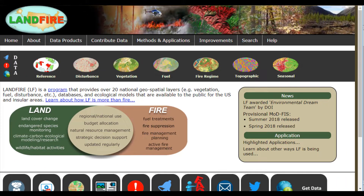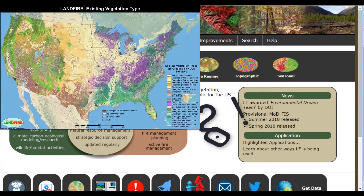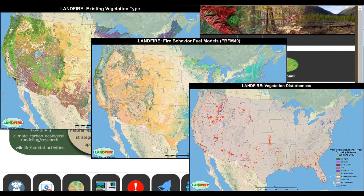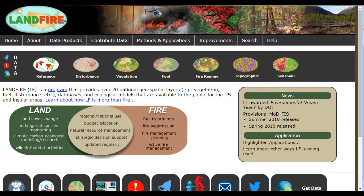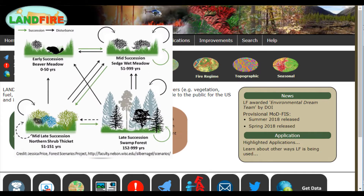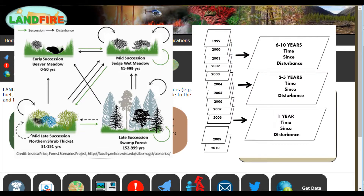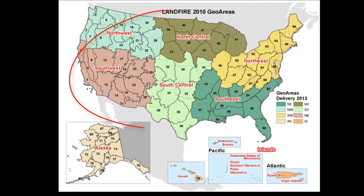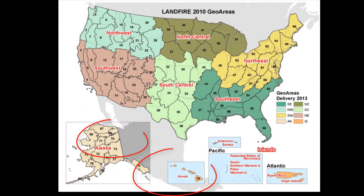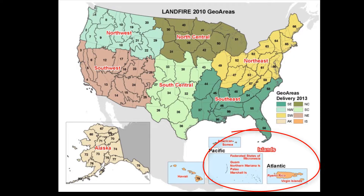LANDFIRE is a program that provides over 20 national geospatial layers like vegetation, fuels, and disturbance. There are also databases and ecological models such as vegetation succession or state and transition, vegetation time since disturbance, and fuel transition over time. It covers the whole continental United States, Alaska and Hawaii, as well as data for the territories.